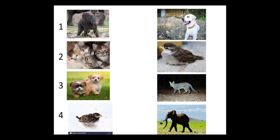The first picture is of a calf. A calf is the young one of an elephant. We have to match it with elephant. So where is elephant? Here is elephant as number 1.